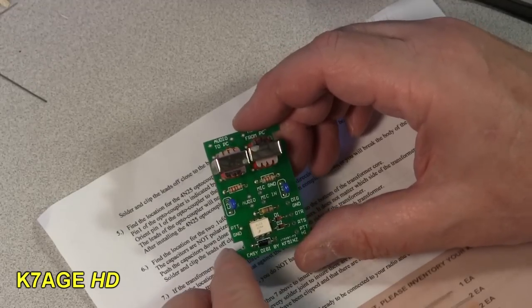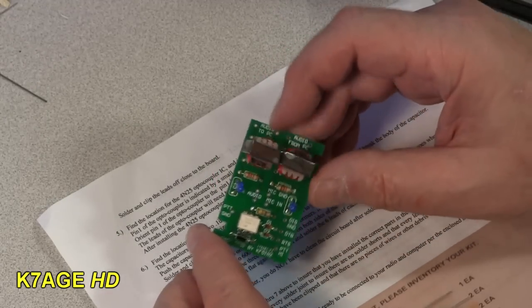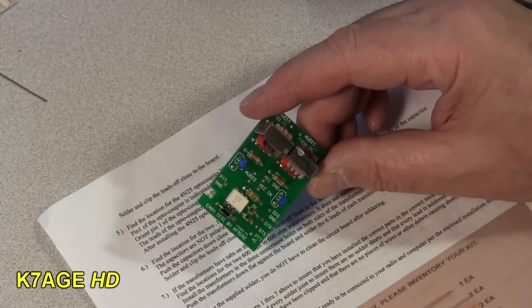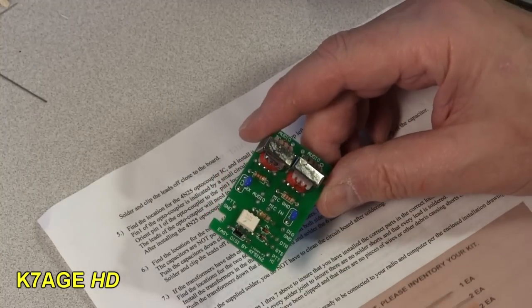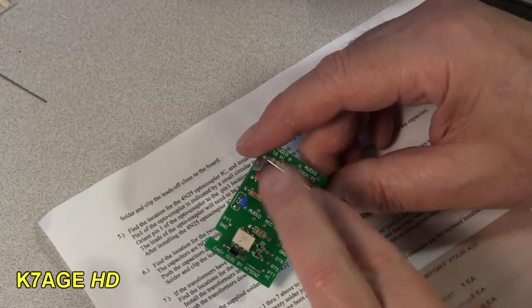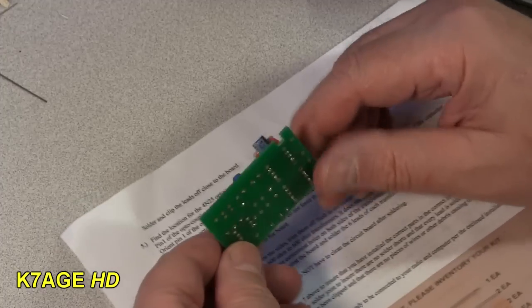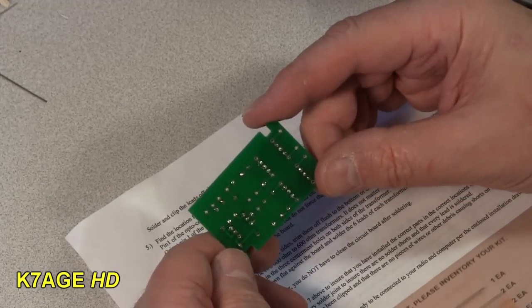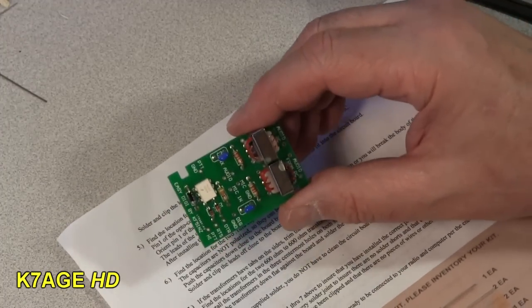Next is to mount the two transformers. Doesn't matter which way they go in. Okay, well that completes putting everything on the board and soldering all of that. Total of three resistors, three diodes, two capacitors, an opto isolator, and two transformers. I've looked this over and I'm basically happy with it.